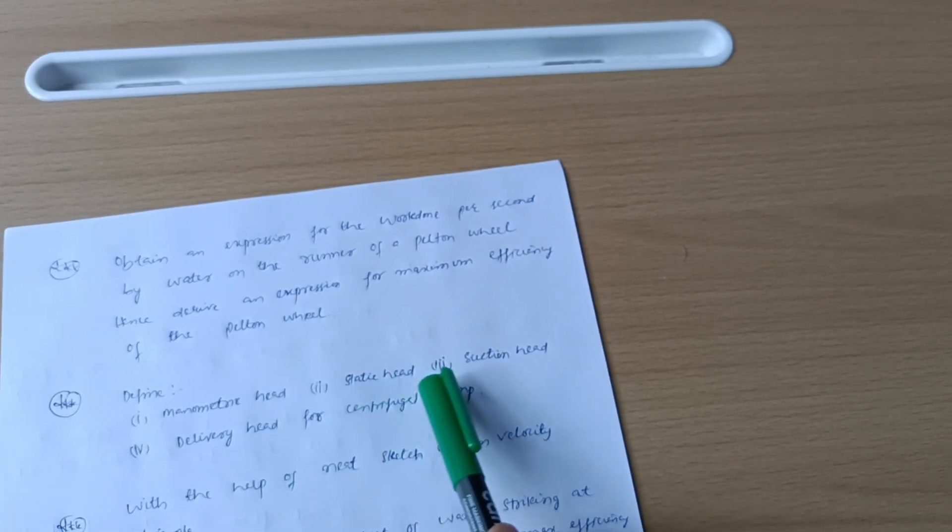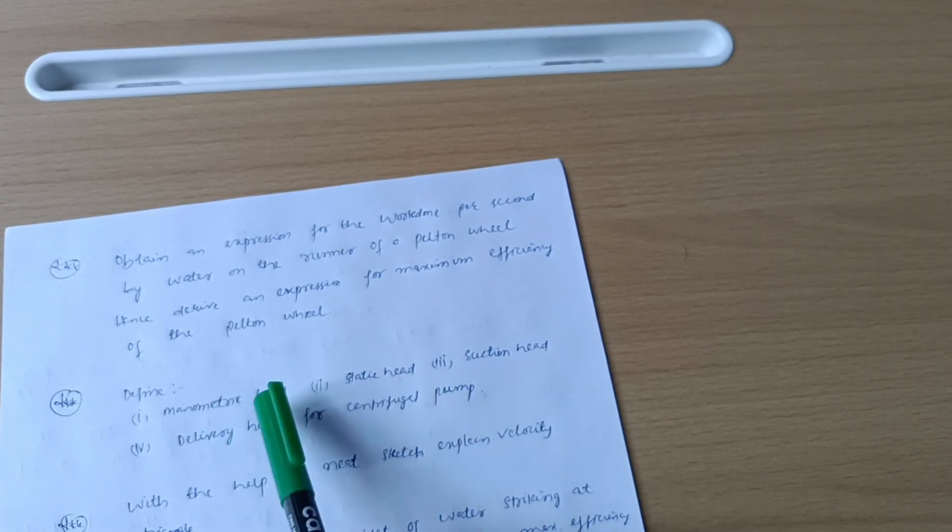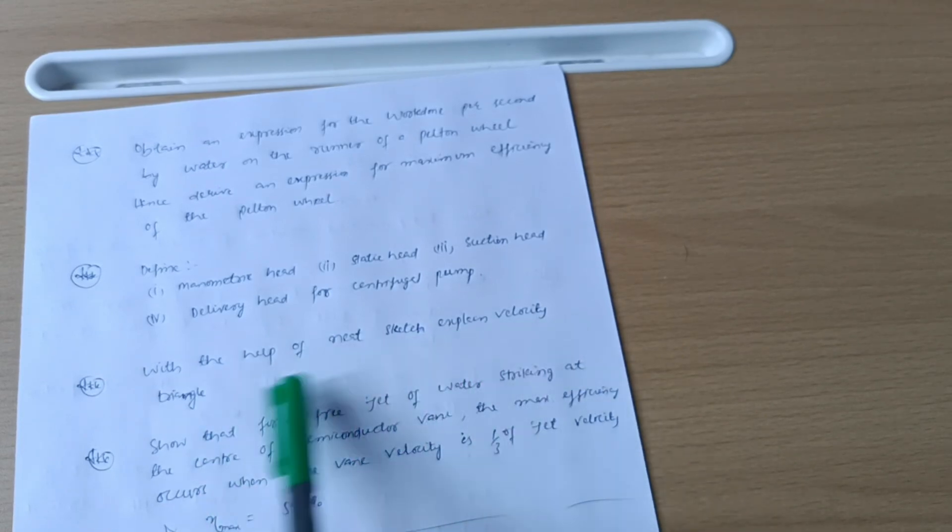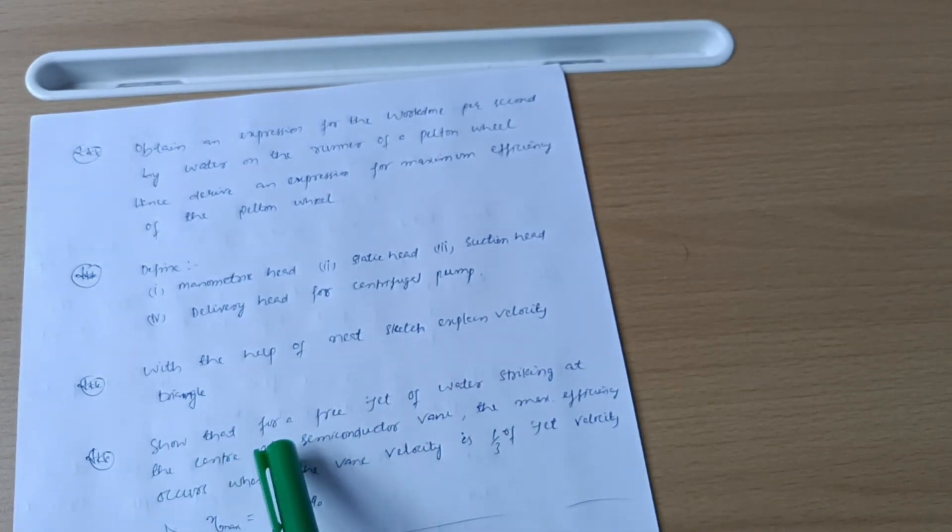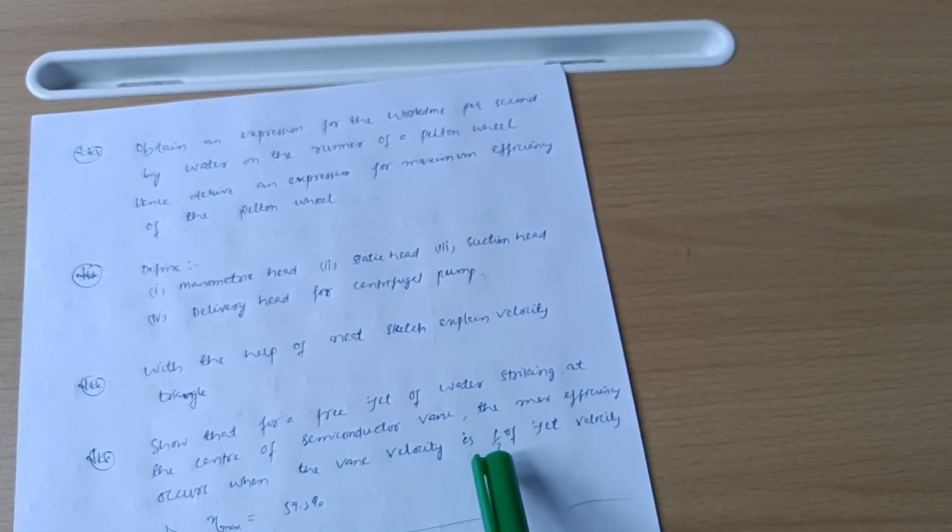Define manometric head, static head, suction head, and delivery head. These four definitions you have to go for the centrifugal pump. With the help of neat sketch explain velocity triangle. Show that for a free jet of water striking at the center of a semicircular vane, the maximum efficiency occurs when the vane velocity is one-third of jet velocity and the maximum efficiency is equal to 59.2%.